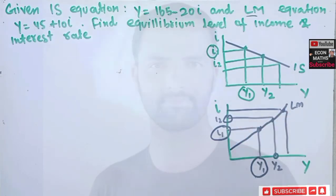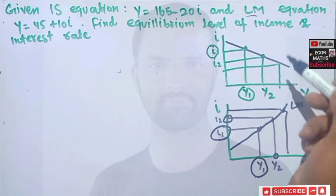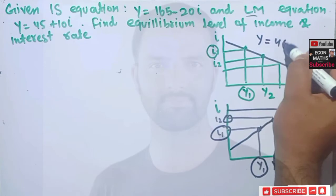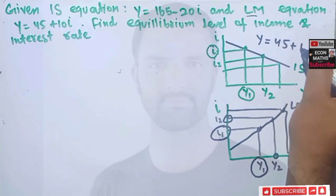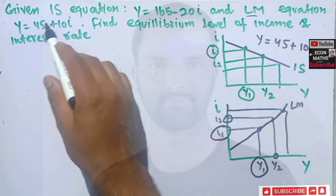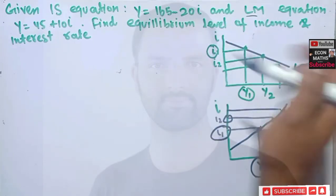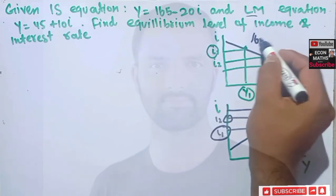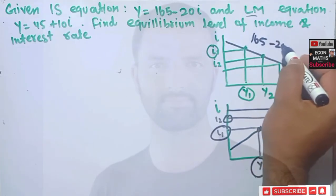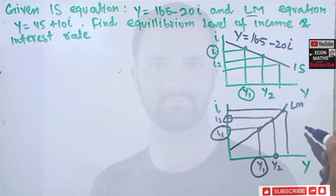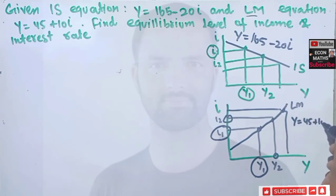So to summarize: our IS equation is Y = 165 − 20I, and our LM equation is Y = 45 + 10I. Now we need to find the equilibrium level of income and rate of interest.